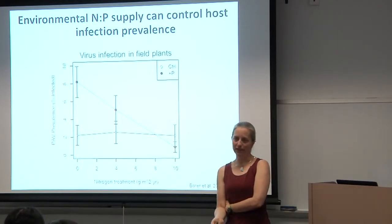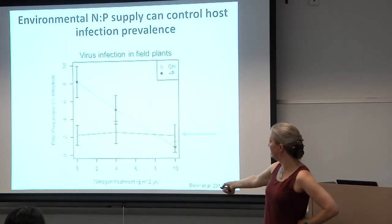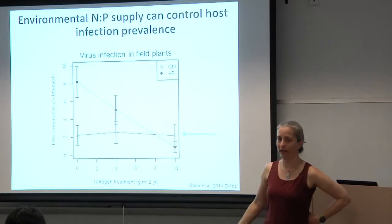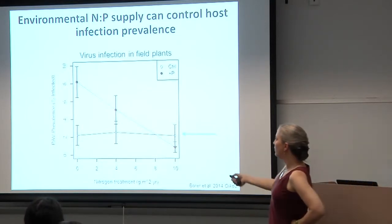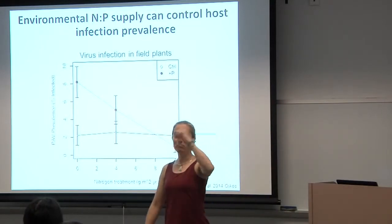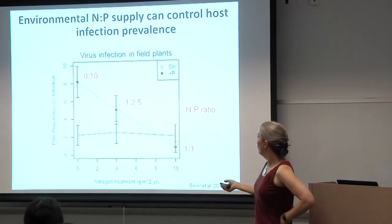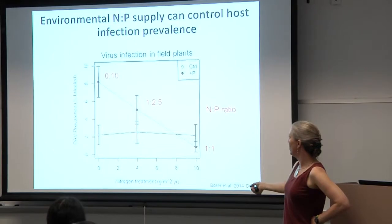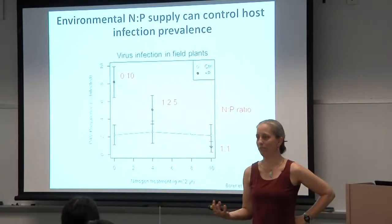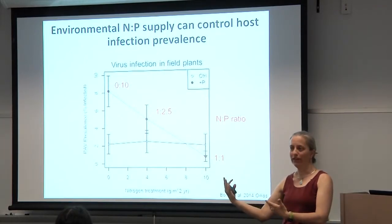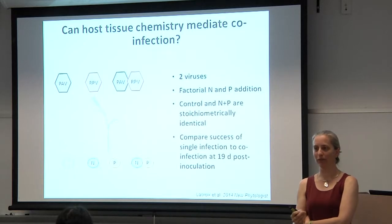Another problem with the field work is we had not been able to sort apart whether it was nutrient supply rate or nutrient supply ratio that was determining these patterns. This is one study that suggested supply ratio was very important. Where nitrogen is added at zero to very high rates, prevalence of infection is pretty constant when you don't add phosphorus. When phosphorus is added with no nitrogen, you get a massive increase in prevalence. But as the ratio declines to one-to-one, you see a decline back to no difference from nitrogen added alone. So it may not simply be the rate of supply.